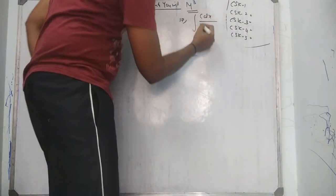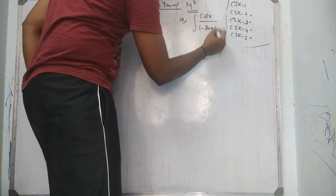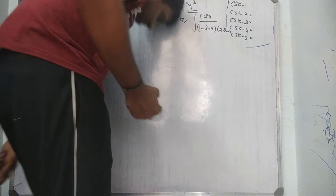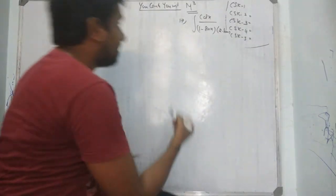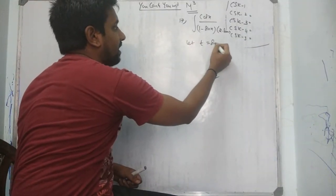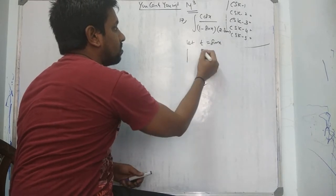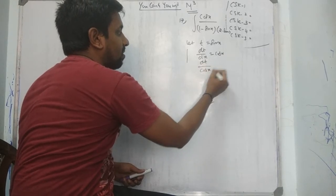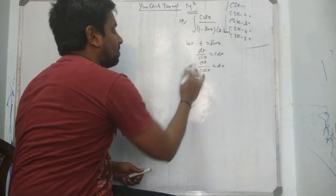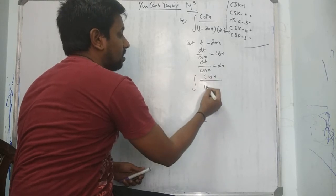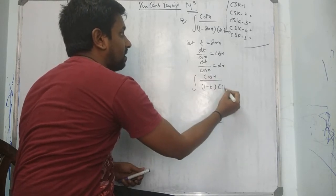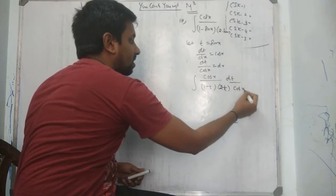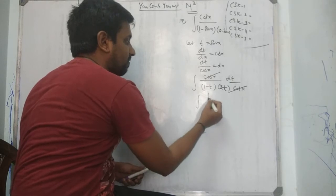The integral is cos x over (1 minus sin x)(2 minus sin x). This is a shortcut: let t equal to sin x, therefore dt/dx equals cos x, so dt/cos x equals dx. The new question will be integration of cos x over (1 minus t)(2 minus t) into dt over cos x. The cos x cancels.